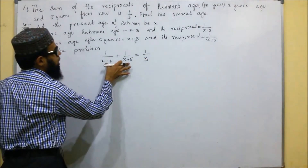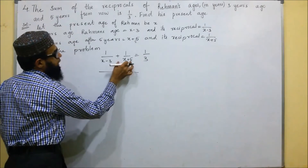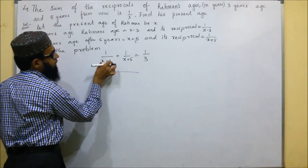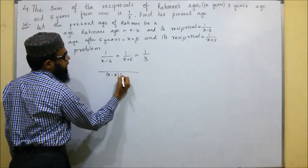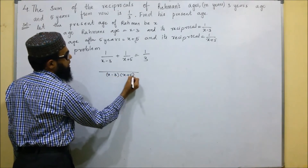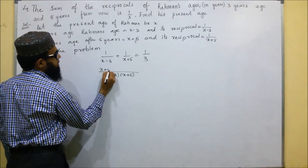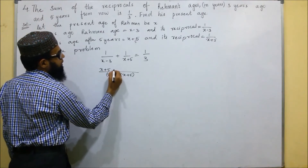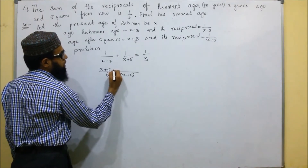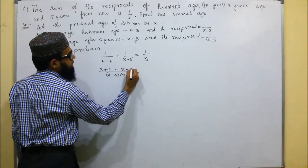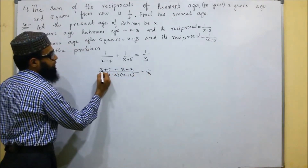We can take out the LCM of this. Taking LCM of (X minus three) and (X plus five), we get: (X plus five) plus (X minus three), all over (X minus three)(X plus five), equals one by three.